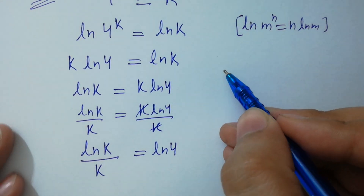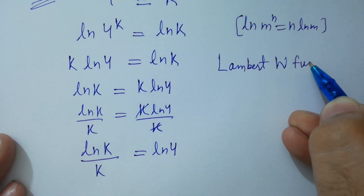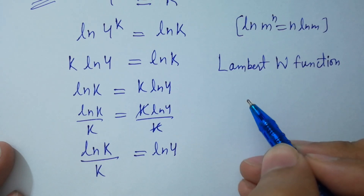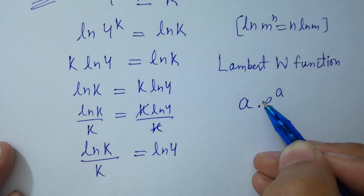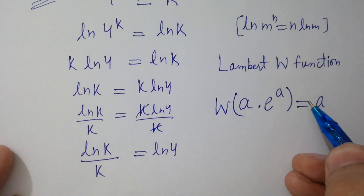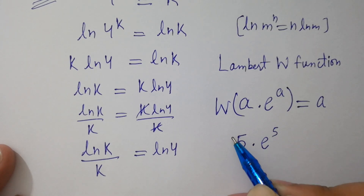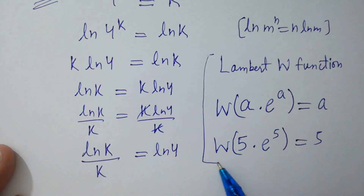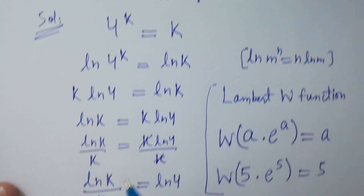I am going to apply the Lambert W function here, which is very easy and simple. If we have an expression a times e to the power a and apply the Lambert W function, it will be equal to a. We need this expression to get the value of k faster. Let's do that now.